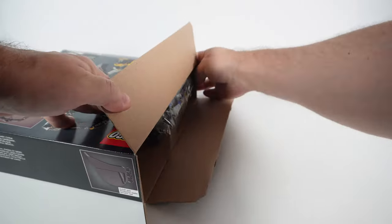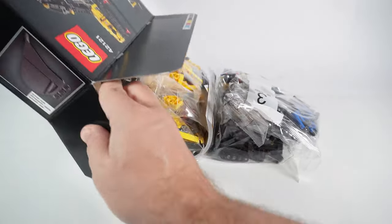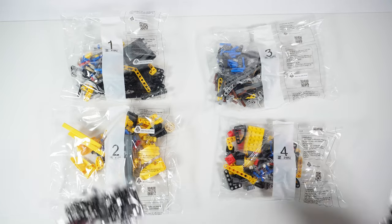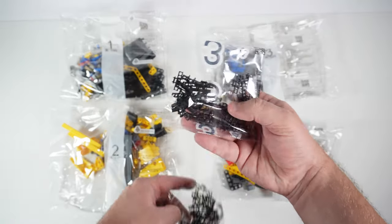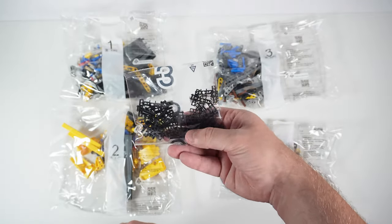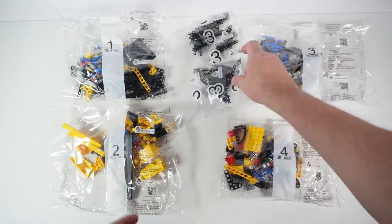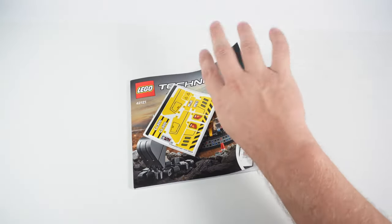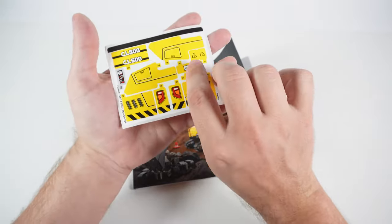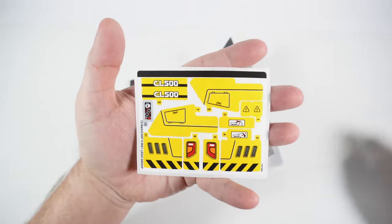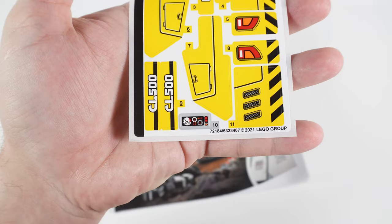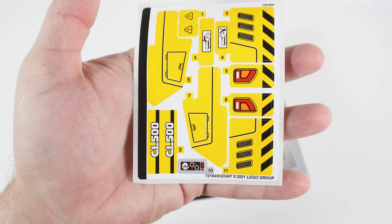Inside the box we have four medium-sized plastic bags with Technic pieces and two separate small bags with a lot of black link threads. There are actually 45 of those in each bag. Also we have a book with building instructions and a sheet of stickers numbered from 1 to 11, with 13 stickers in total.